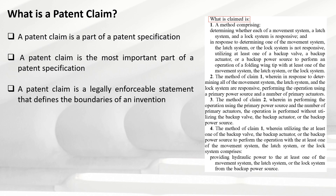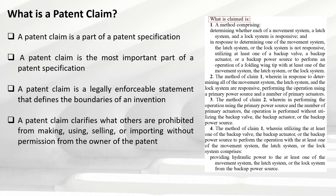The patent claim sets the scope of protection of the invention in the patent application. The fourth point states a patent claim clarifies what others are prohibited from making, using, selling, or importing without permission from the owner of the invention. Since the patent claim defines the scope of protection — what the invention is trying to protect — it also makes clear what others cannot use, sell, or import without taking permission from the owner.